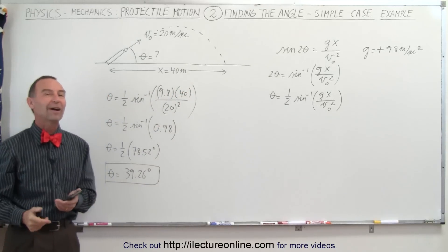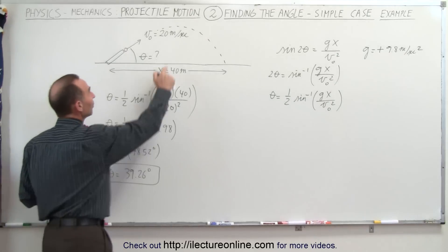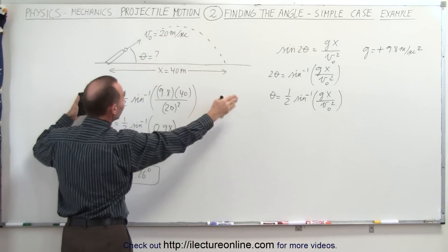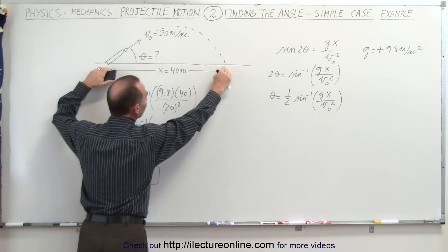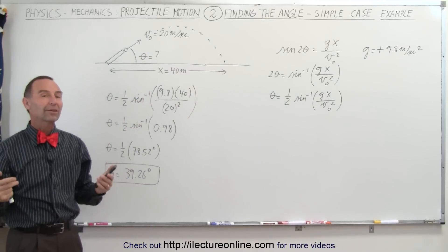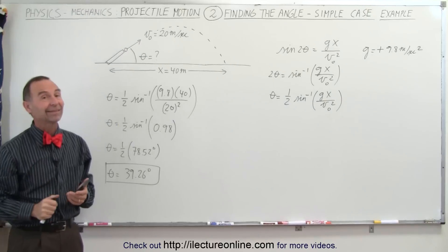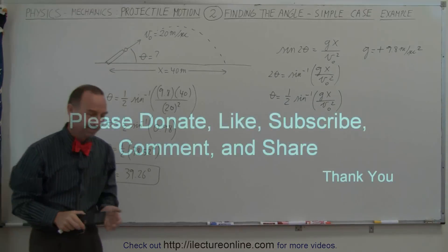And so that's how we find the angle required for a projectile to reach a particular distance, given an initial velocity. Only of course, in this case, where the height of the start of the projectile and the end of the projectile is the same height. Now, in the next video, we're going to show you how to derive the equation when the heights are not the same. And yes, that is a little bit more difficult. We'll be right back.